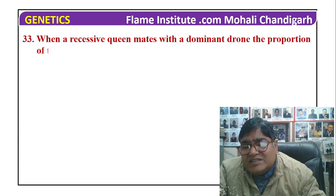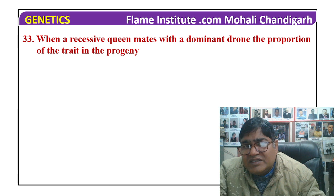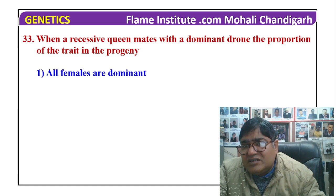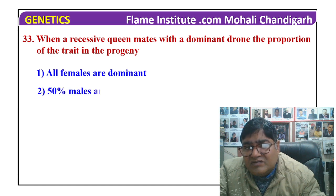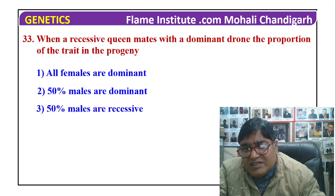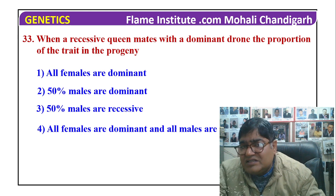When a recessive queen mates with a dominant drone, the proportion of the trait in the progeny is: all females are dominant, 50% of males are dominant, and 50% of males are recessive. Alternatively, all females are dominant and all males are recessive.